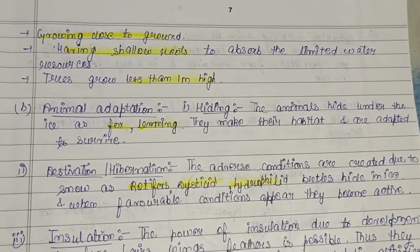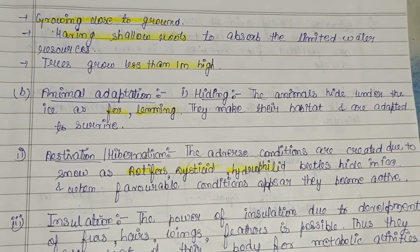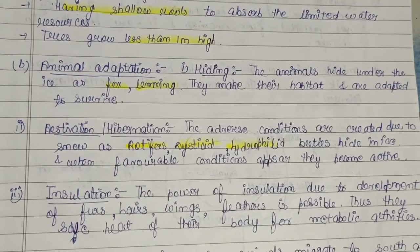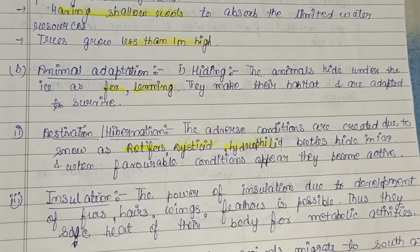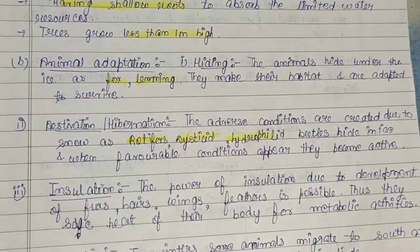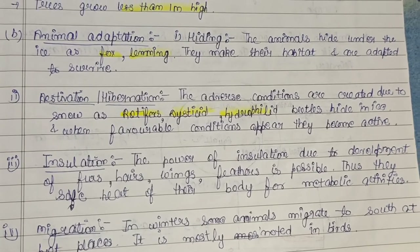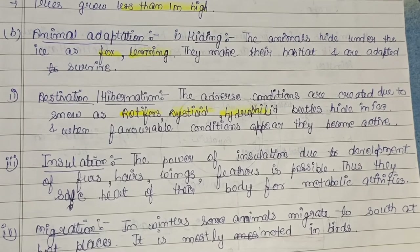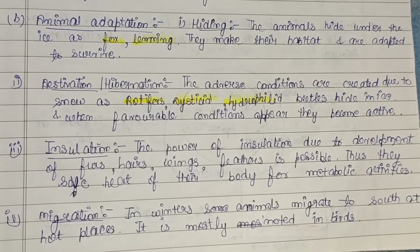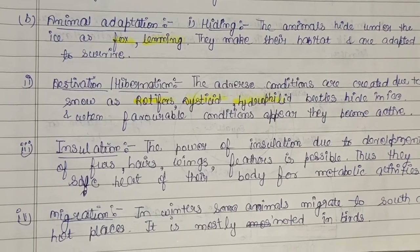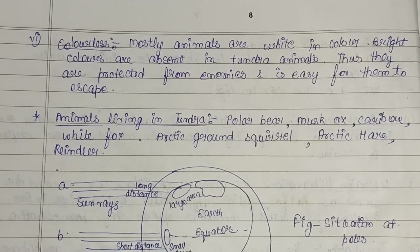Trees grow less than one meter in height. Animal adaptations include: hiding — animals hide under ice, like foxes and lemmings, making habitats adapted to survive. Estivation or hibernation — in adverse conditions, organisms such as rotifers, diastatic insects, and hydrophiloid beetles hide in the ice and become active again when favorable conditions appear. Insulation — development of furs, hairs, and feathers saves body heat for metabolic activity. Migration — in winter, some animals migrate south to warmer places, mostly noted in birds.